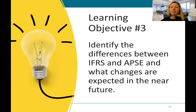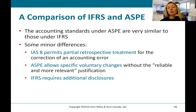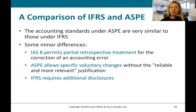Learning objective number three is to identify the differences between IFRS and ASPE and what changes are expected in the near future. They are very similar — basically converged. There are very small differences around partial retrospective treatment: IAS 8 allows it, and ASPE allows voluntary changes without the 'reliable and more relevant' justification. IFRS requires additional disclosures. But generally speaking, these two standards are converged, and there's not much to worry about from an IFRS versus ASPE perspective for this chapter.